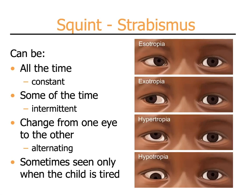Esotropia is specifically strabismus where one eye is crossed in towards the nose. Exotropia is when one eye is deviated outward. Hypertropia is an upward deviated eye and hypotropia is a downward deviated eye.